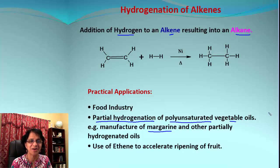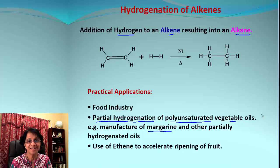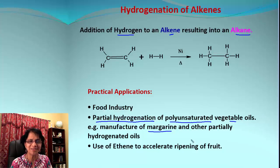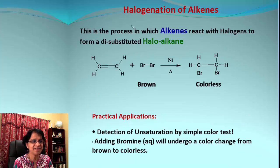What's the advantage of this process? It makes the compound solid — margarine is solid while oils are liquid or semi-liquid. Because it is solid, it also increases the shelf life, which is good for food industries. One more thing to note: ethane is also used for accelerating the ripening of fruit in food industries.